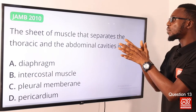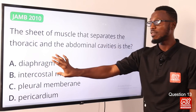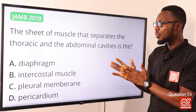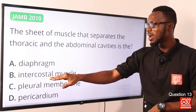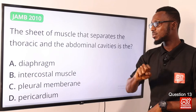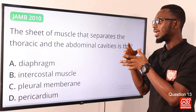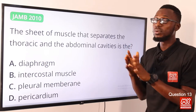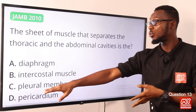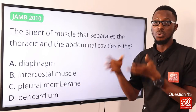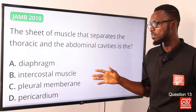Question 13: The sheet of muscle that separates the thoracic and the abdominal cavities is the diaphragm — this is the large sheet of muscle. The intercostal muscles are found in between the ribs. Both are essential for breathing. The pleural membrane surrounds and encloses the lungs within the ribs; it is airtight and waterproof, essential for lung protection.